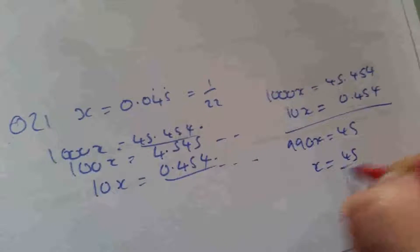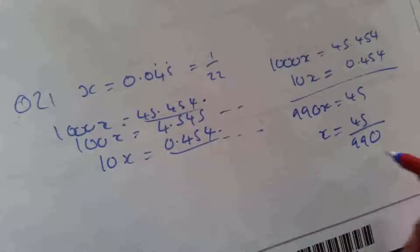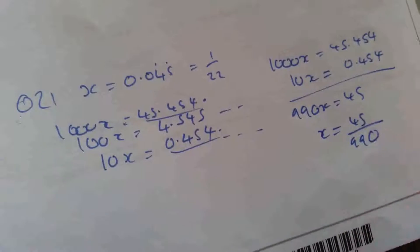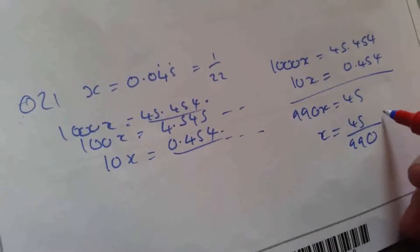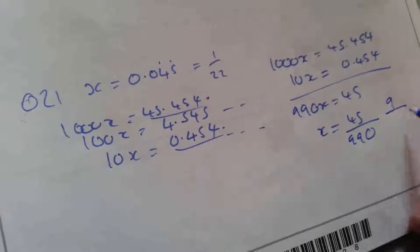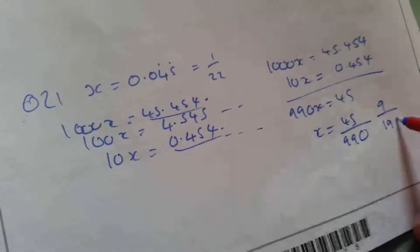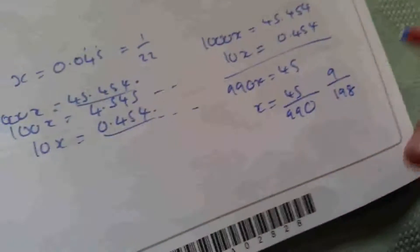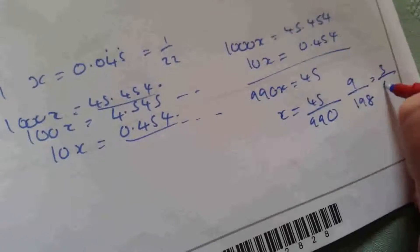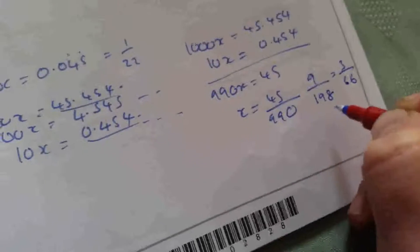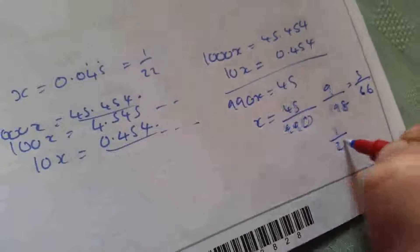That tells me x = 45 over 990. That simplifies: 5 goes into 45 nine times and 5 goes into 990 — giving 9 over 198, which simplifies to 3 over 66, and 3 over 66 simplifies again to 1 over 22.